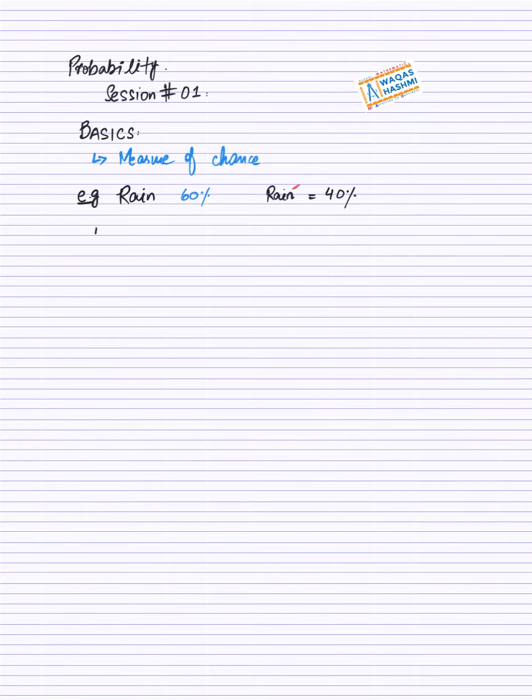Ab isko hum generally kis tarah define karte hai? Probability of an event E for event is equals to number of favorable outcome. Favorable ka matlab wo outcome jisko aap chaah rahe hai ke woh aaye, divided by denominator mein aayega aapke paas sample space.